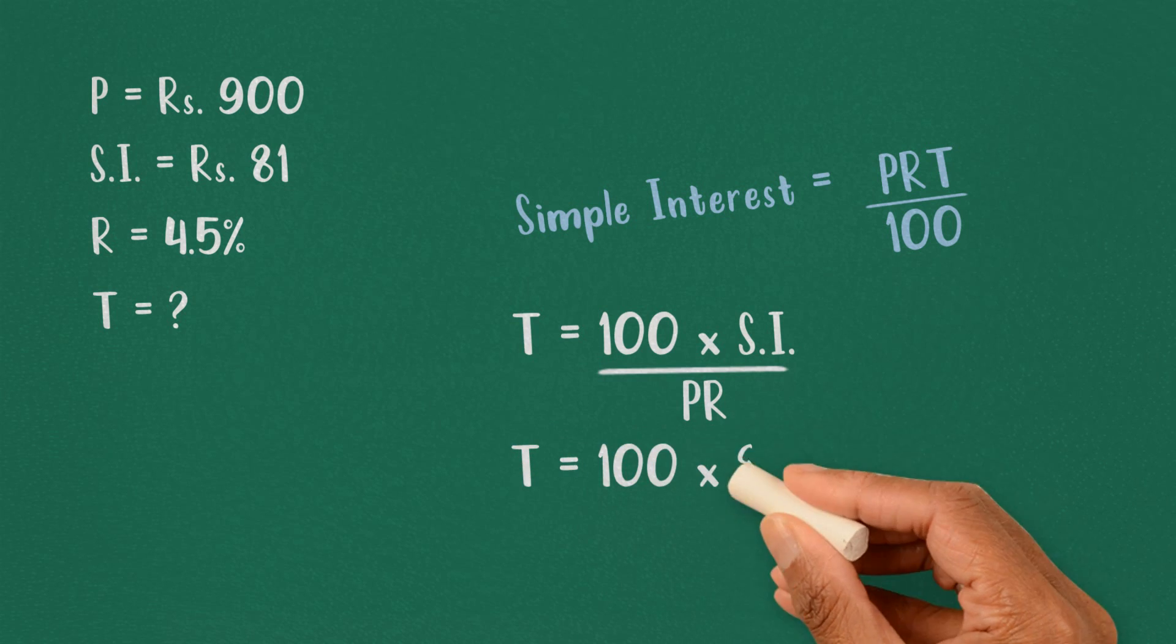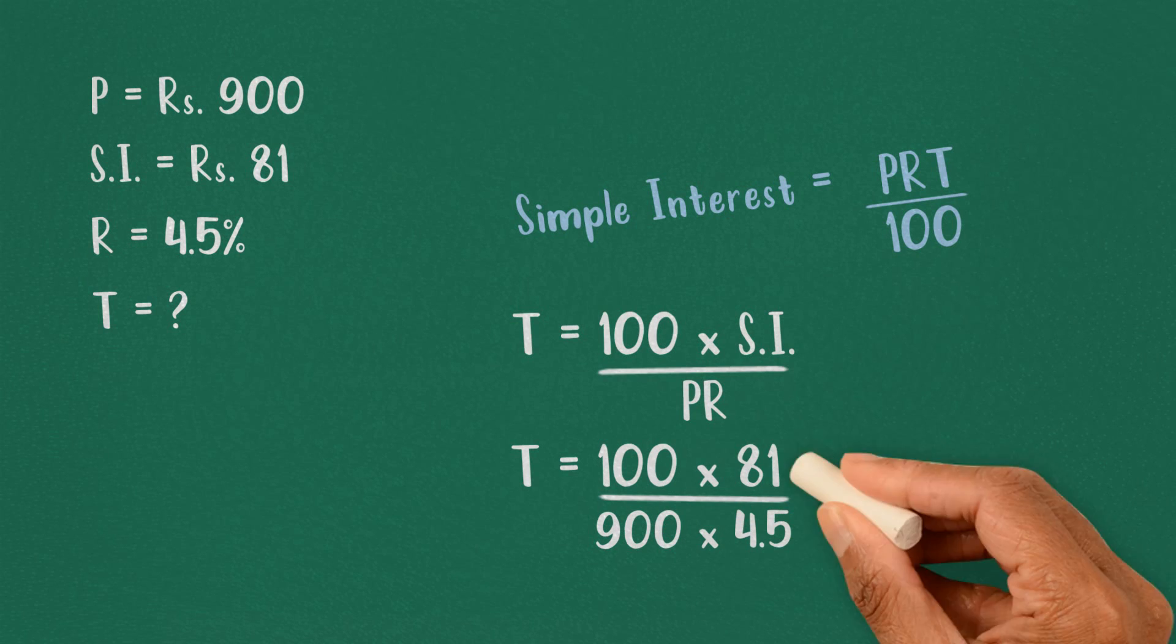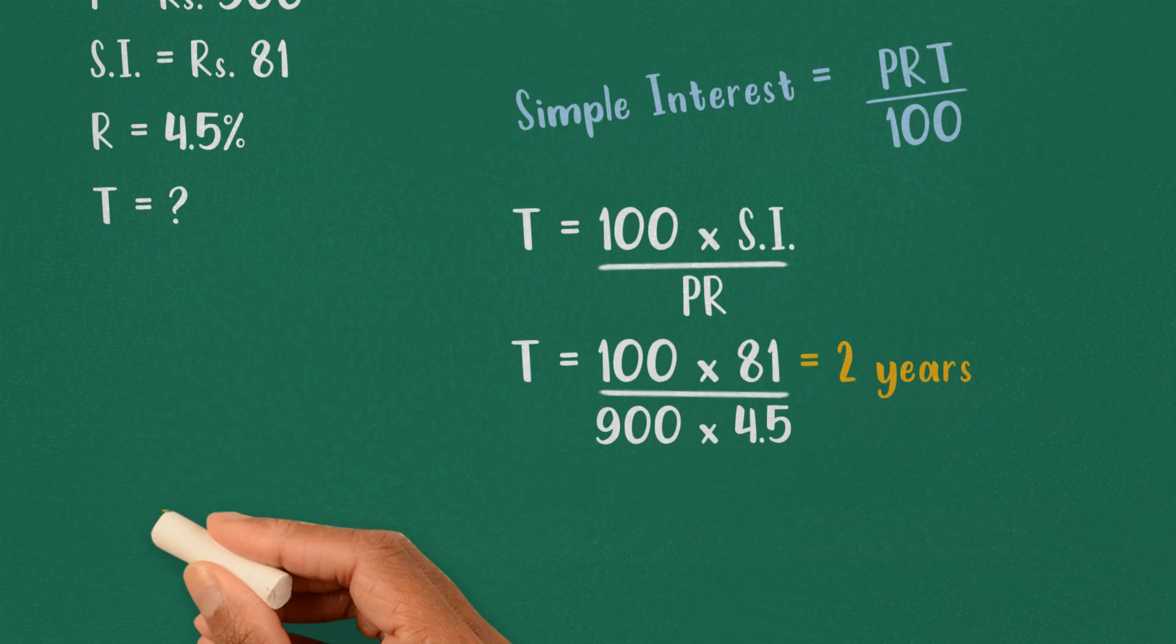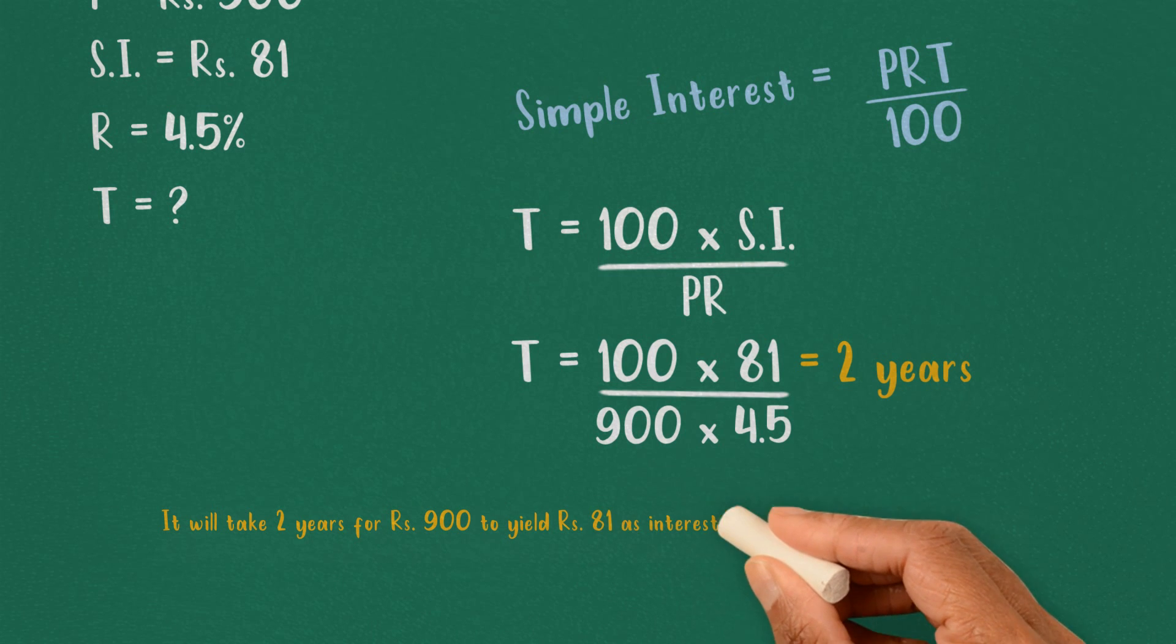So using the information we have, we get 2 years. It will take 2 years for Rs. 900 to yield Rs. 81 as interest at the rate of 4.5%.